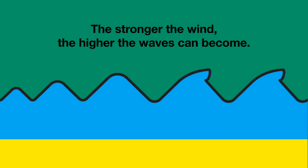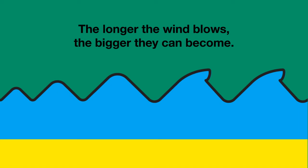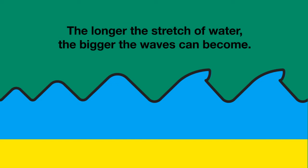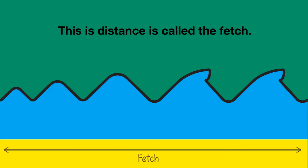The stronger the wind, the higher the wind waves can become. And the longer the wind blows, the bigger they can become as well. Furthermore, the longer the stretch of water in which the wind blows in one direction, the bigger the waves can become. This distance is called the fetch.